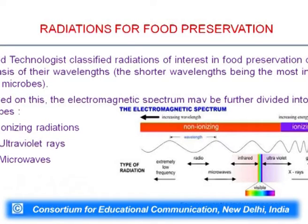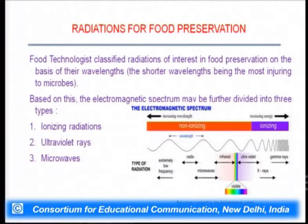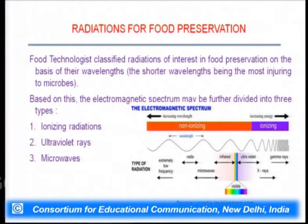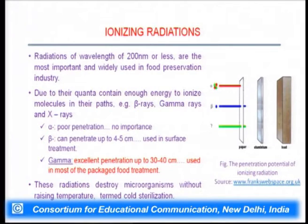Food technologists classify radiations of interest in food preservation on the basis of wavelength, with shorter wavelengths being most harmful to microorganisms. Based on this, the electromagnetic spectrum is divided into three types: ionizing radiations, ultraviolet rays, and microwaves. These can be used to preserve different types of food.